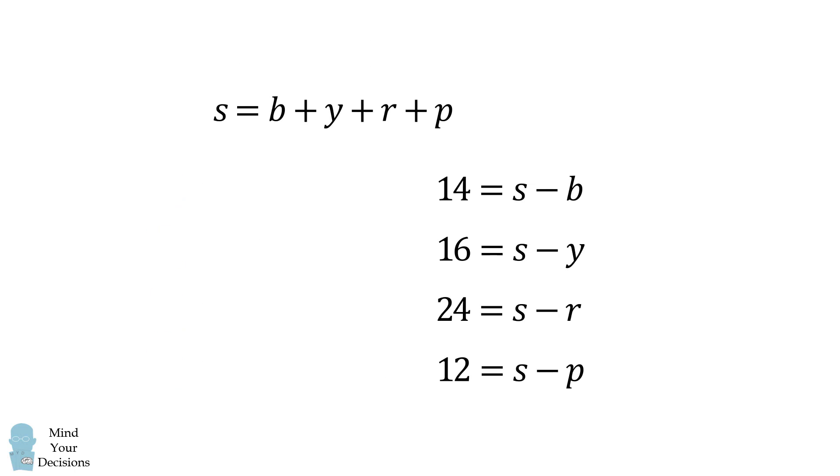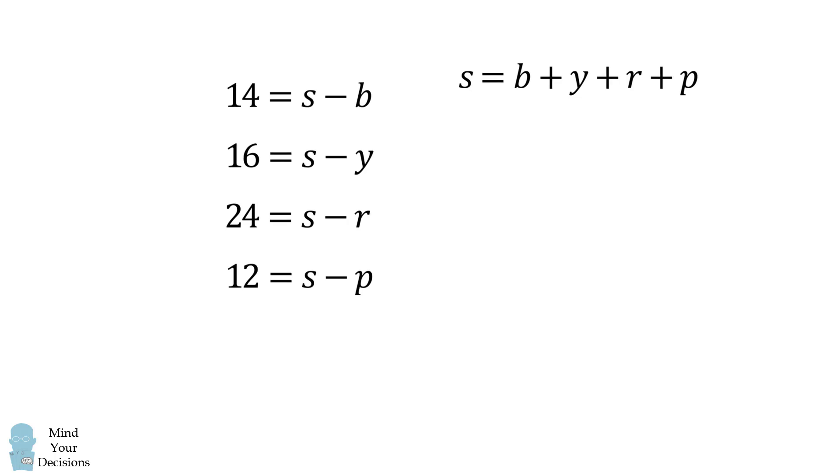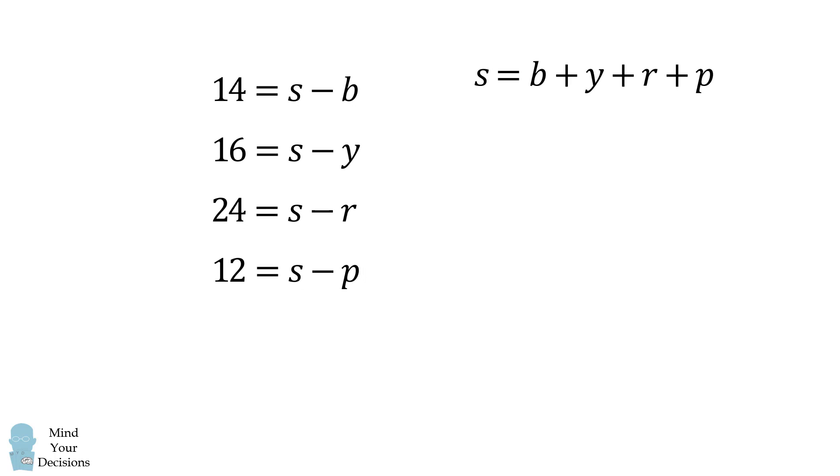We now have a system of equations. Let's take these four equations and add them together. The left-hand side will be equal to the sum of these numbers, which is equal to 66. The right-hand side will be equal to 4s minus one of each color.